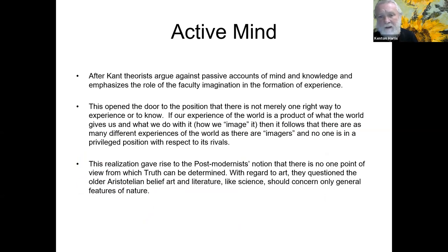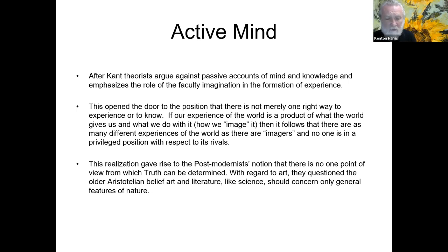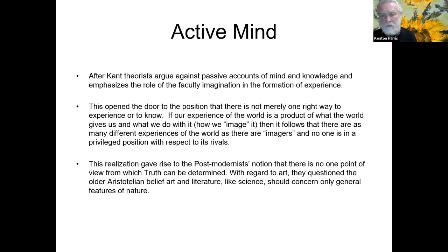After Kant, theorists argue against passive accounts of mind and knowledge and emphasize the role of imagination in the formation of experience. This opens the door to the position that there's not merely one right way to experience or to know. If our experience of the world is a product of what the world gives us and what we do with it — how we image it — then there may be as many different experiences of the world as there are imagers, and no one is in a privileged position with respect to its rivals. This gives rise to postmodern notions that there is no one point of view from which the capital-T truth can be determined.